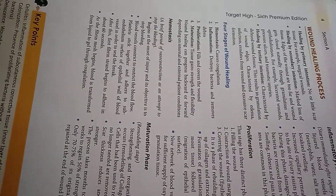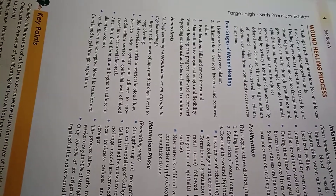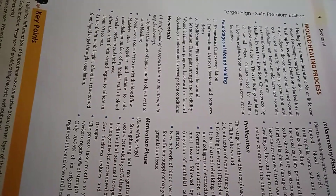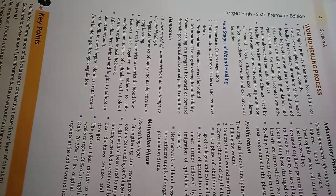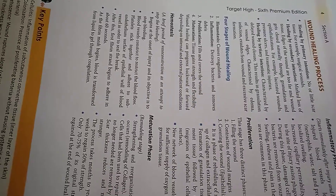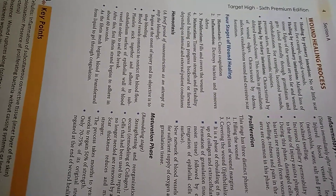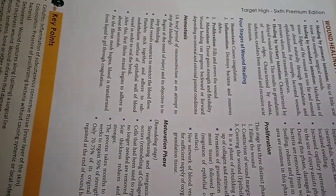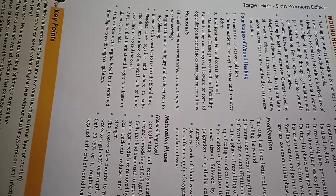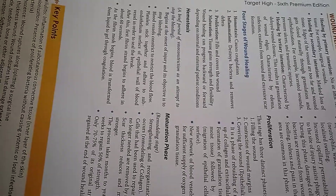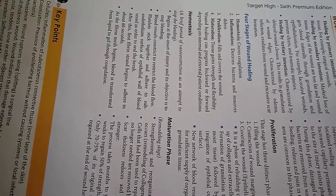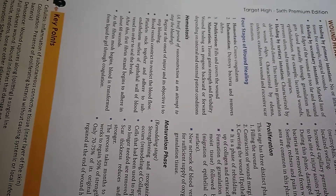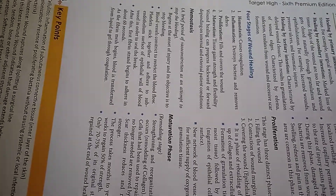Next is abnormal and excessive scar formation. The 4 stages of wound healing are: hemostasis, inflammation, proliferation, and maturation. Hemostasis causes coagulation. Inflammation destroys bacteria and removes debris. Proliferation fills and covers the wound. The tissue gains strength and flexibility. Wound healing can progress backward or forward depending on internal and external patient conditions. Hemostasis is a brief period of vasoconstriction to stop bleeding, beginning at the onset of injury. Blood vessels constrict to restrict blood flow. Platelets adhere to the sub-endothelial surface to seal the break. The first fibrin strand begins to adhere at about 60 seconds, and blood is transformed from liquid to gel through coagulation.